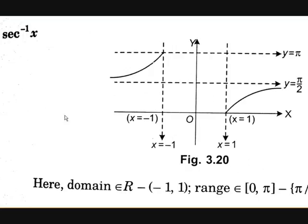Now secant inverse x. This is somewhat the reverse of cosecant inverse x. The domain of secant inverse x is ℝ minus the closed interval [−1, 1]. The range is somewhat similar to cos, so the range is [0, π] minus {π/2}, because secant(π/2) is infinity.